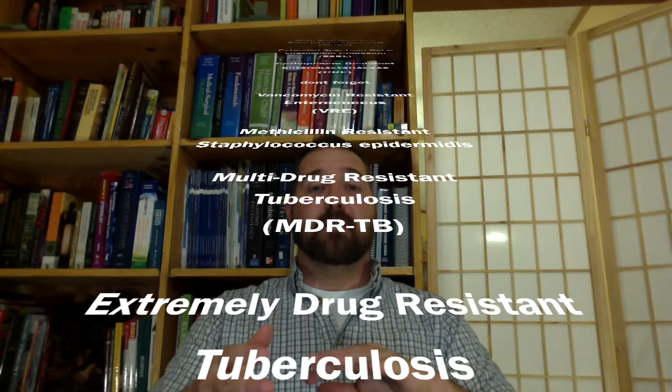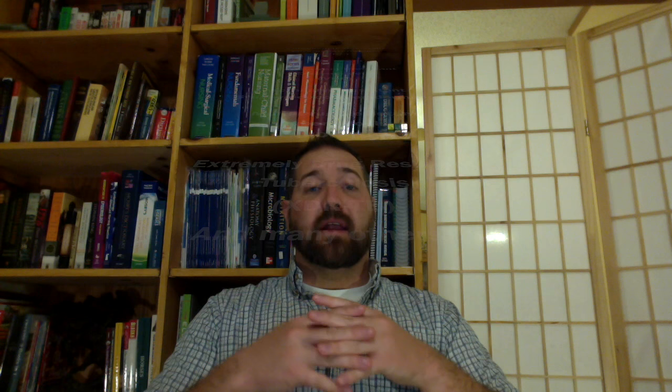So ESBLs are extended-spectrum beta-lactamase-producing bacteria. You heard the word lactamase, extended-spectrum beta-lactamase. Anytime you hear a word with ACE on the end, A-S-E, that means it's an enzyme. And what enzymes do is they are catalysts and compounds that break down things. So extended-spectrum beta-lactamase-producing organism. It produces an enzyme, the lactamase, that breaks down beta-lactam antibiotics. And it renders these antibiotics ineffective. And you can have E. coli, ESBL, Klebsiella, ESBL. All matter, not every bacteria, but a lot of bacteria can be ESBL producers.